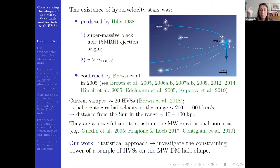The existence of such stars was confirmed by Brown et al. in 2005. And then other observations followed. And nowadays, we have the current sample of around 20 hypervelocity stars located in the halo. Since these stars are ejected at the galactic center but are observed in the outer halo, they are a powerful tool to constrain the Milky Way gravitational potential.